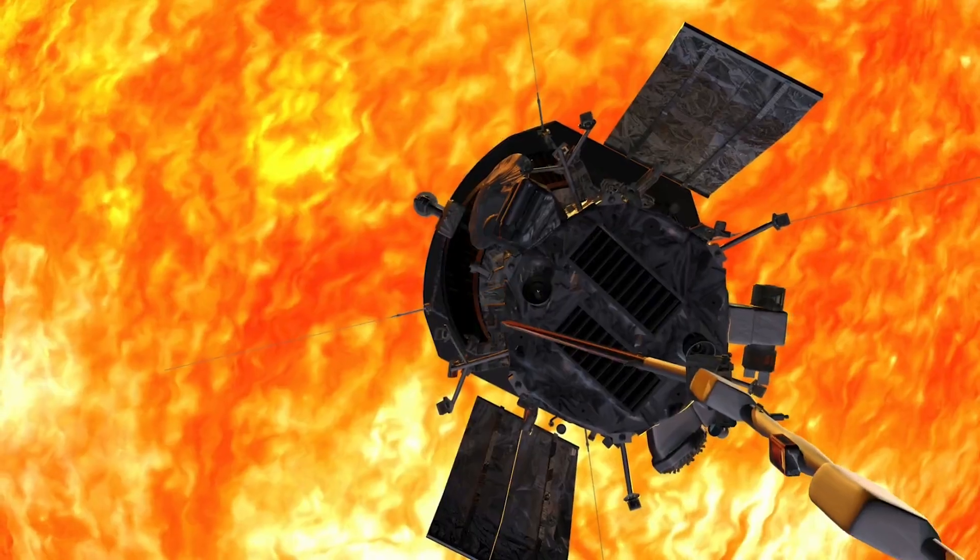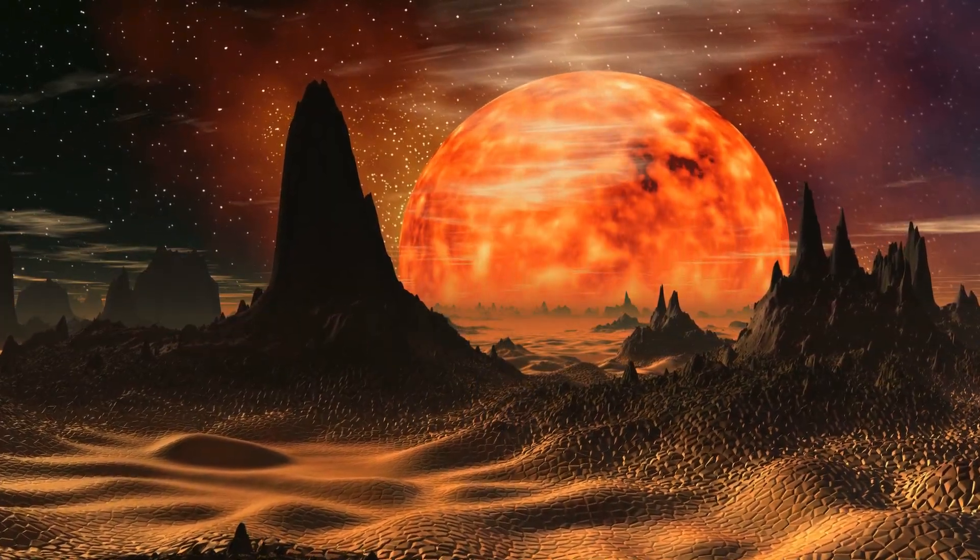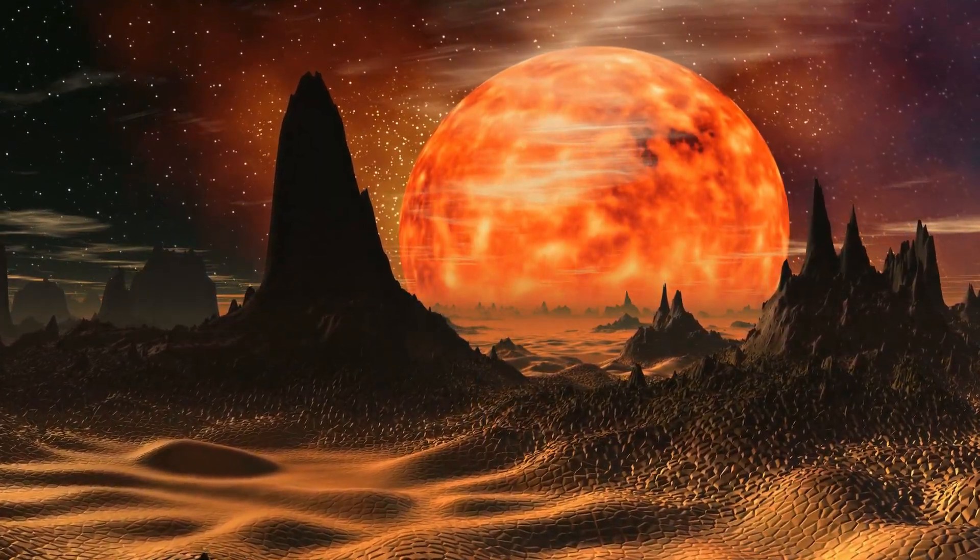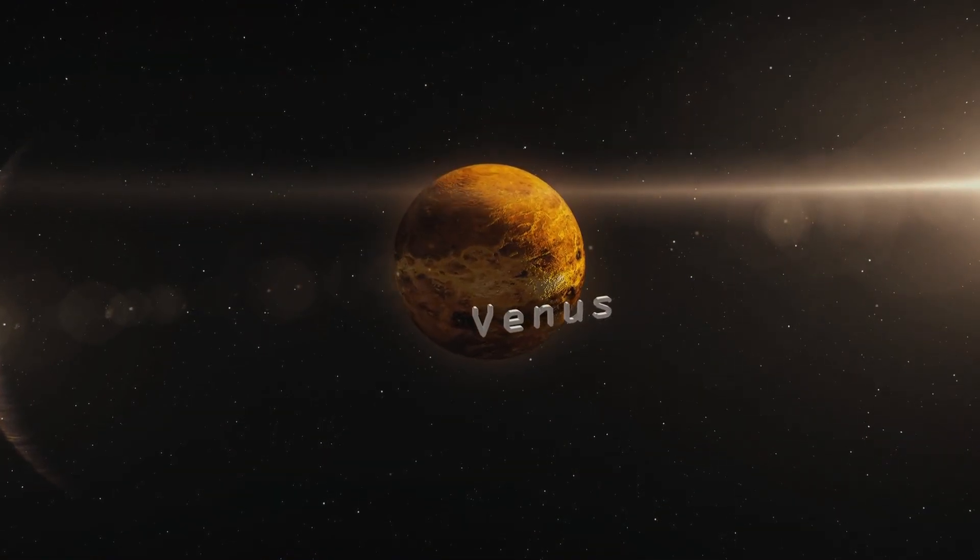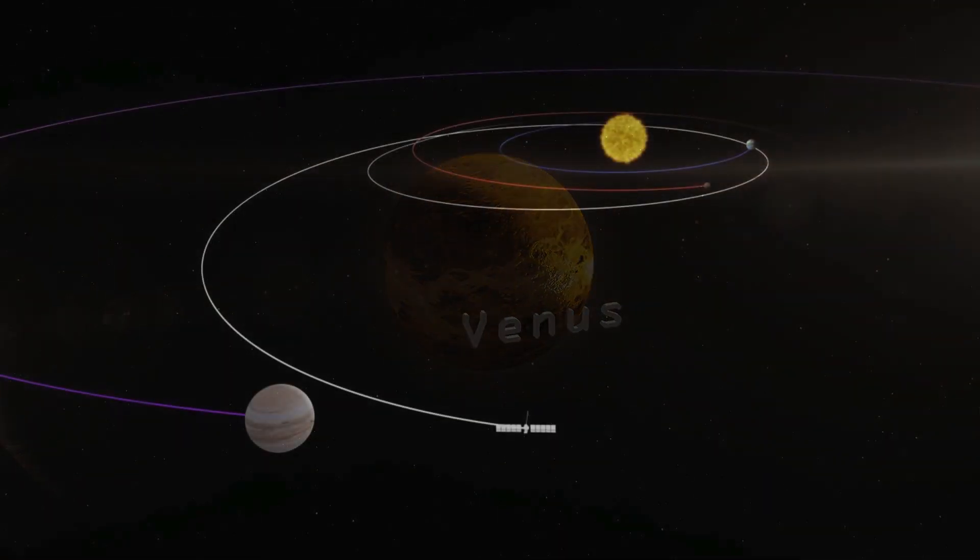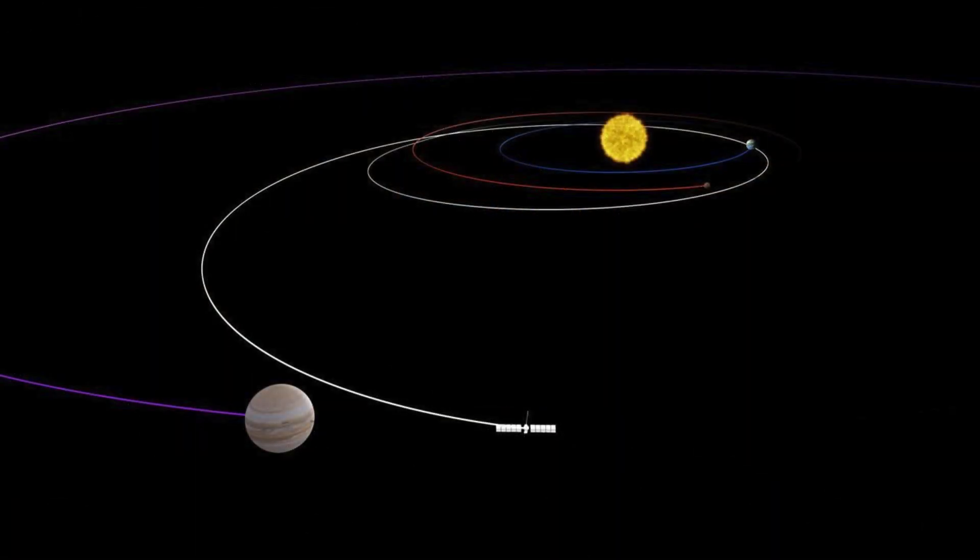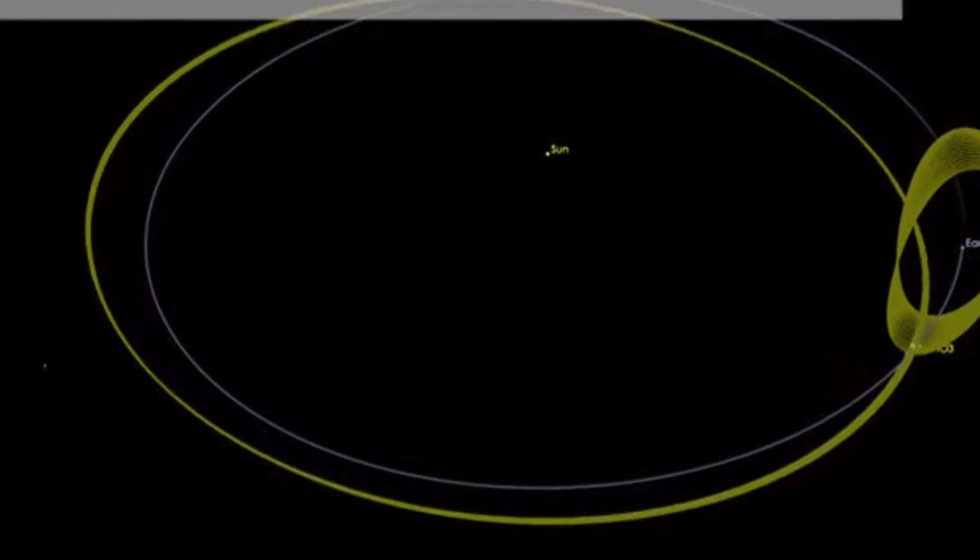Instead of heading straight to the sun, Parker danced with Venus. Seven gravity assists slingshotted it closer and closer. Each pass brought it nearer to its fiery target.